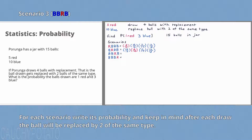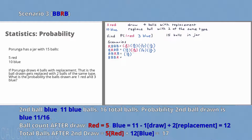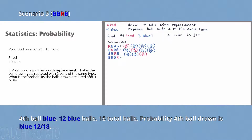The third scenario is: the first two balls blue, third red, and fourth ball blue. First ball drawn is blue: 10/15 probability. Second ball drawn is also blue: 11/16 probability. Third ball drawn is red: 5 red balls with 17 total, so 5/17 probability. Fourth ball drawn is blue: 12/18 probability.